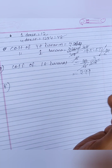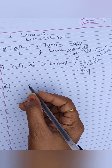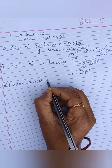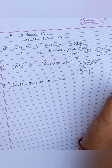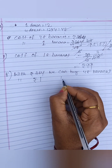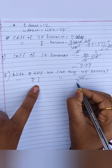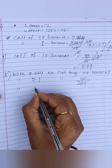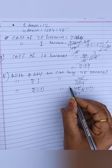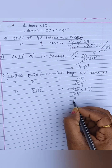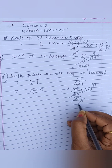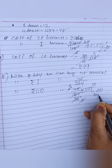Part 2 of Question 4a: find the number of bananas that can be purchased for Rs. 110. With Rs. 264 we can buy 48 bananas. With Rs. 1 we can buy 48/264 bananas. So with Rs. 110 we can buy (48/264) × 110. Simplifying: 48 ÷ 8 = 6, 264 ÷ 8 = 33, then 110 ÷ 33 is not exact so: (6/33) × 110 = 6 × 10 / 3 = 20 bananas.